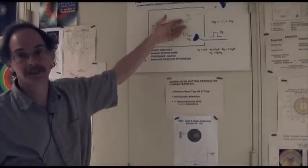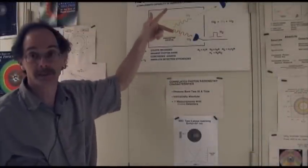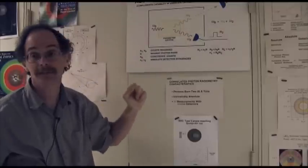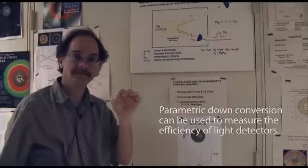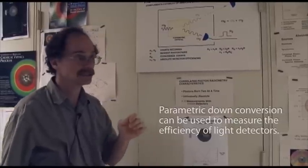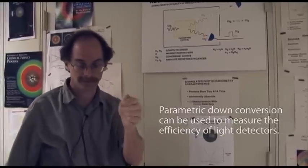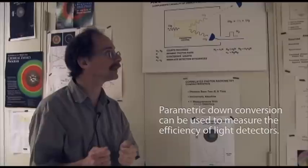So what can you do with this special source of light where you're creating photons two at a time? The most obvious application is to use it to measure the efficiency of a photon counting detector. That is, what's the probability that if a photon goes in, I will get a click coming out of my detector?